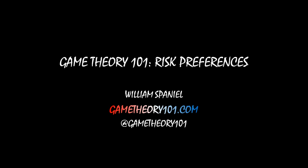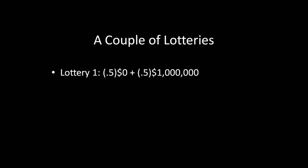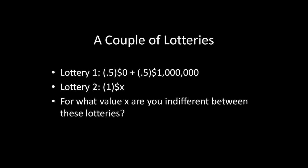I have a couple of lotteries for you. Lottery 1 half of the time pays you nothing, and half of the time pays you $1,000,000. Lottery 2 is a degenerate lottery — it pays you X dollars with certainty. My question to you is: for what value X are you indifferent between these two lotteries?